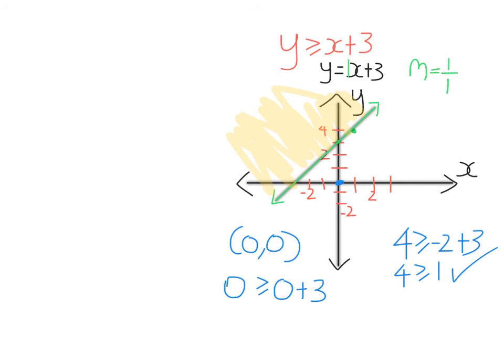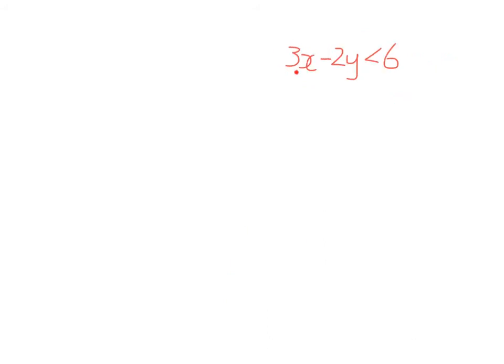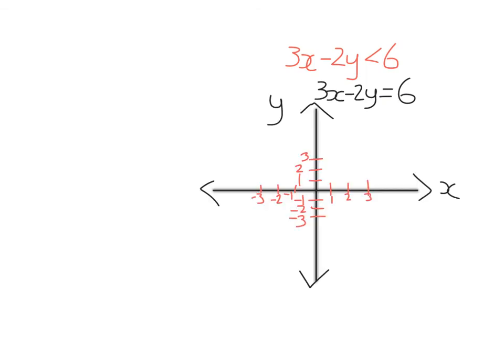Let's do another example. I now want to graph the inequality 3x minus 2y is less than 6. Once again, this will be a whole region — half of the Cartesian plane. My first step: I draw up my axes and graph the line 3x minus 2y equals 6. Because it's not in the form y equals something, I'll use the xy intercept method. Letting x equal 0, I get minus 2y equals 6, so y is minus 3. The y-intercept is minus 3.